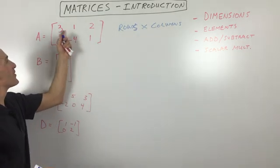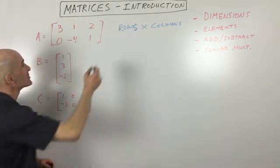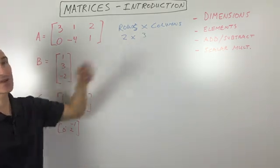So the first row, second row, one, two, three columns. So this is a two by three - two rows, three columns.